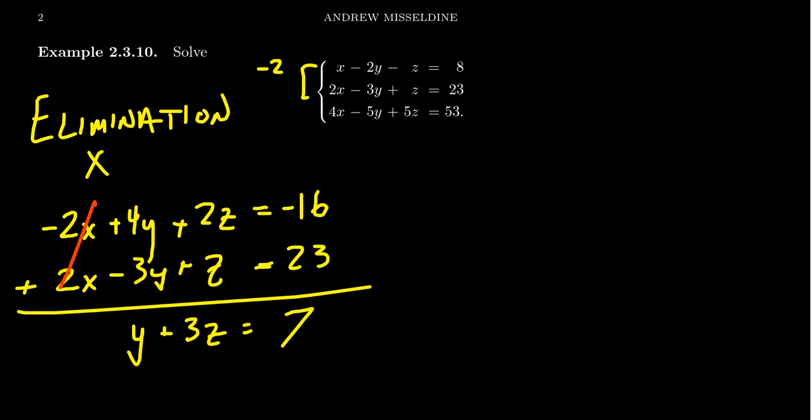So what we're going to do next is we have to then find a second pair of equations so that we can eliminate x again. So what if we eliminate x by taking the first equation and the third equation together and what we're going to do is we're going to adjust things by timesing the first equation by negative four. This is going to give us negative four x plus eight y plus four z and then negative four times eight is going to be negative 32 right here.